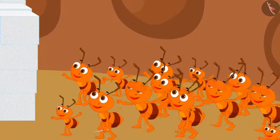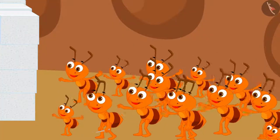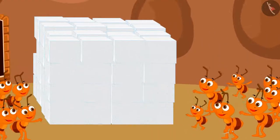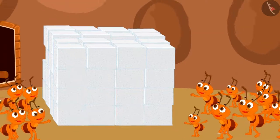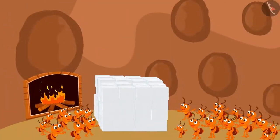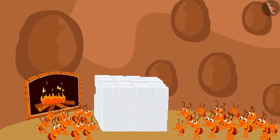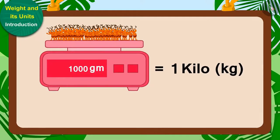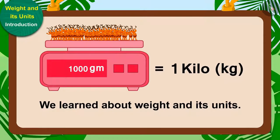The ants were very happy on getting 10 kilos of sugar as they would not have to work hard in the cold weather. Children, in this video we learned about weight and its units. In the next video, we will learn more about it by some interesting examples. We'll see you next time.